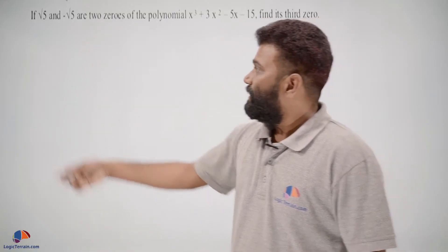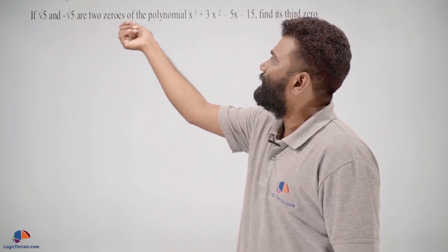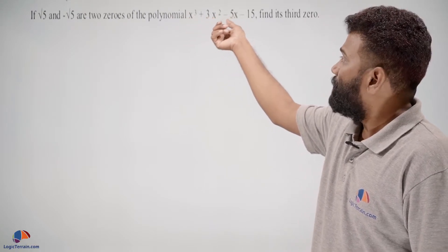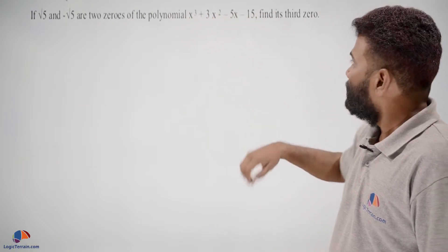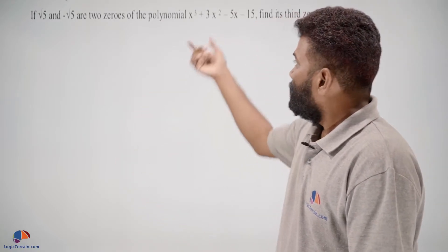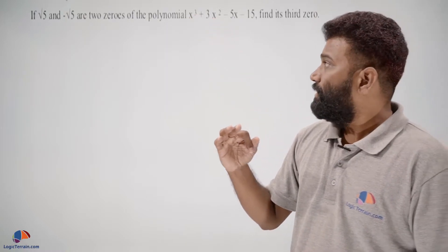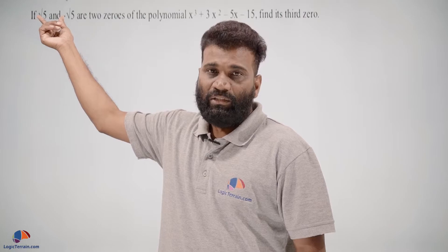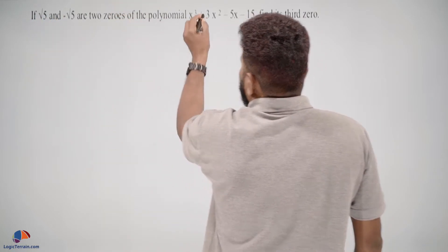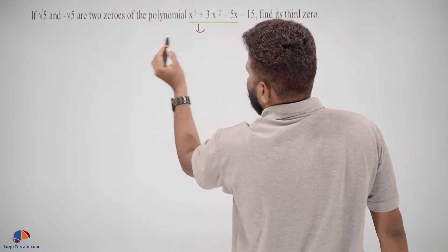Here is our next question: if square root 5 and negative square root 5 are two zeros of the polynomial x cubed plus 3x squared minus 5x minus 15, find its third zero. Since it is a third degree polynomial, it will have three zeros. We have already been given two zeros and we need to find the third zero.